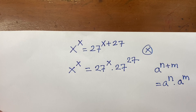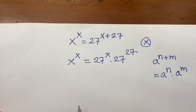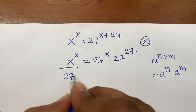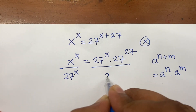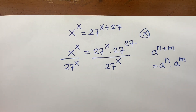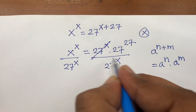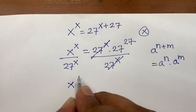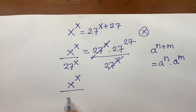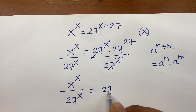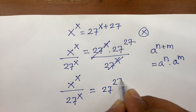Now I divide both sides by 27^x, so the 27^x terms cancel. We find x^x over 27^x is equal to 27^27.